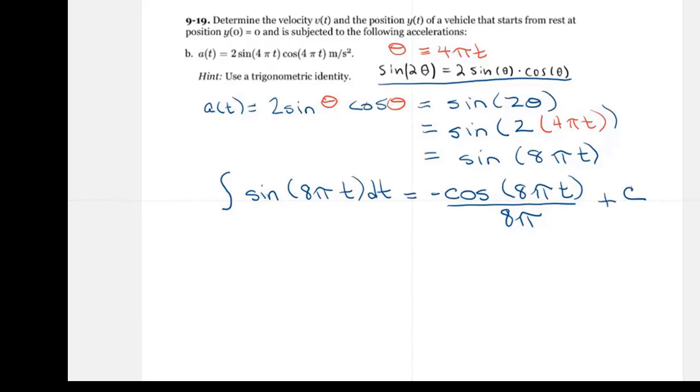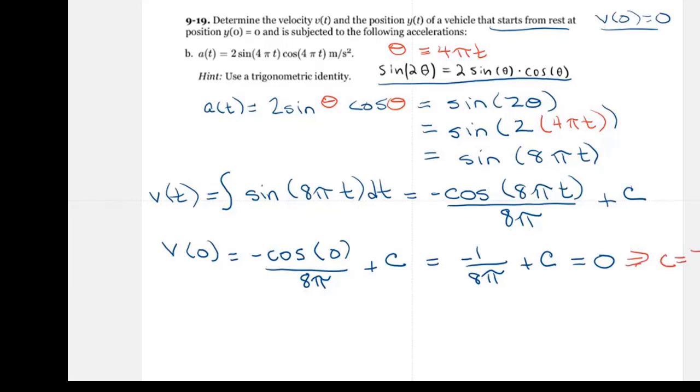And it still says it's starting from rest. This is equal to my velocity. I know that V of 0 equals 0. Basically, this means V of 0 equals 0. I have V of 0 equals negative cosine of 0 over 8π plus C. And cosine of 0 is 1. This equals negative 1 over 8π plus C. And we said that V of 0 equals 0. So C has got to equal 1 over 8π.